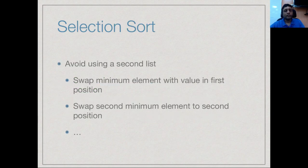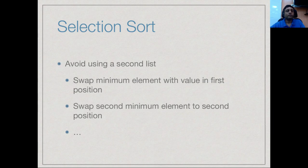This version of selection sort builds a second list. We can eliminate the second list by doing the following: when we find the minimum element, we know it must go to the beginning of the list. Instead of creating a new list, we move it to the beginning of the current list by exchanging positions. We find the minimum position and swap the value there with the value at the first position. Now the smallest value is at the beginning. We then start from the second element onwards and look for the minimum again, moving it to the second position, and so on — sorting in place without a second list.